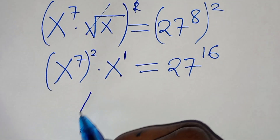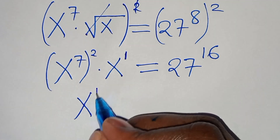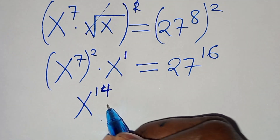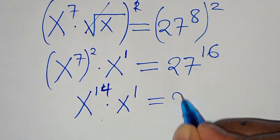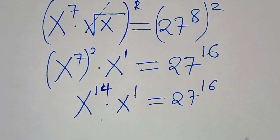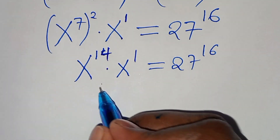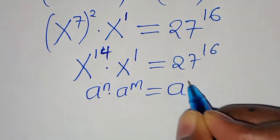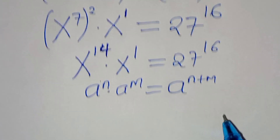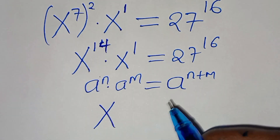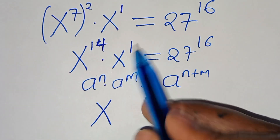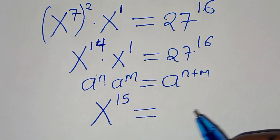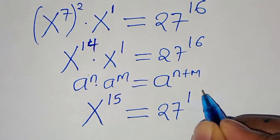This implies x to the power of 7 times 2, which is 14, so we have x to the power of 14 times x to the power of 1, equal to 27 to the power of 16. Again using a^n · a^m = a^(n+m), the left side becomes x to the power of 14 plus 1, which is 15. So x to the power of 15 equals 27 to the power of 16.